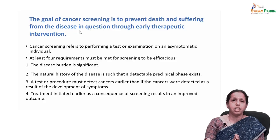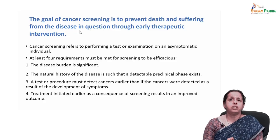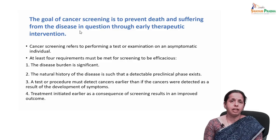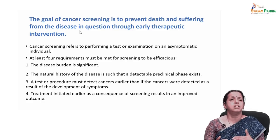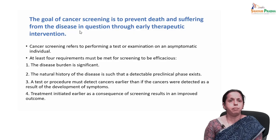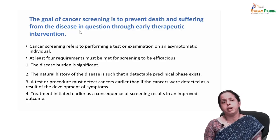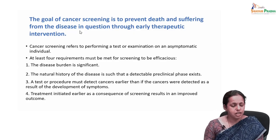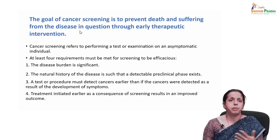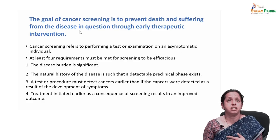Cancer screening usually refers to performing a test or examination on an asymptomatic individual who may seem healthy but could be harboring the disease in its initial stages. What are the criteria to be met for screening to be efficient? The disease must be significant — for example, breast cancer or lung cancer, which have very high disease burden.